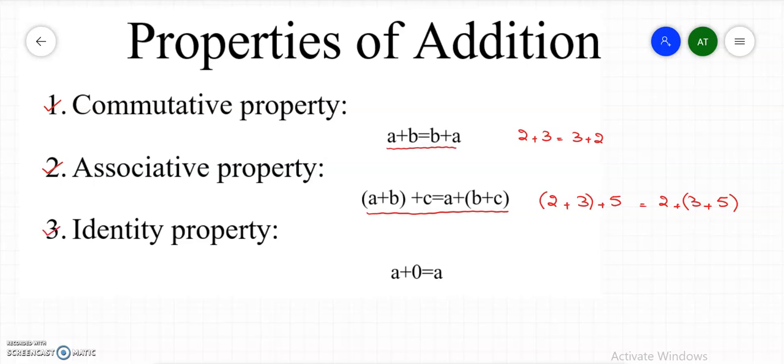The third is the identity property. In identity property, we have any number adding in 0 gives you the same number. Like we have 9 plus 0 gives us 9.